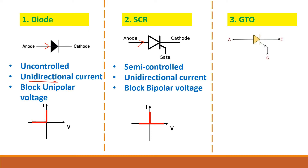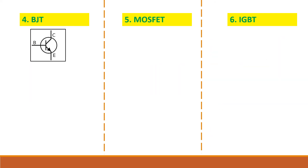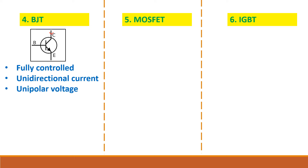GTO is similar to SCR except that SCR is a semi-controlled switch while GTO is a fully controlled switch. GTO has unidirectional current and can block bipolar voltage — unidirectional current and bipolar voltage. Next is BJT, which is a fully controlled device: only when you give a gate pulse will it conduct, and when you remove the gate pulse it will not conduct. BJT can carry current only in one direction and can block only forward voltage — unidirectional current and unipolar voltage blocking.